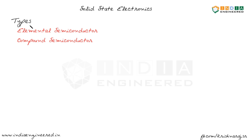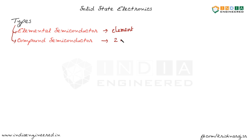This is one way of classifying semiconductor materials. We have elemental semiconductors and compound semiconductors. Elemental semiconductors are made of just one element — that's why they are called elemental semiconductors. In the case of compound semiconductors, we have two or more elements.